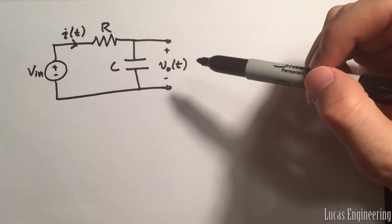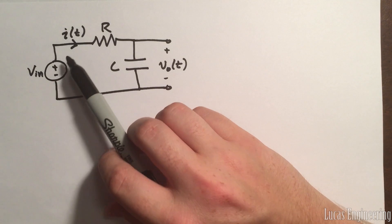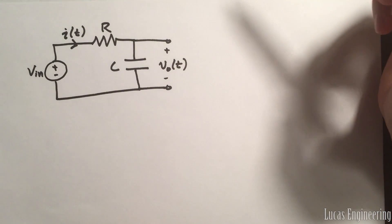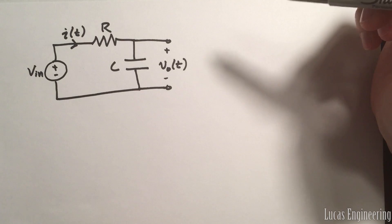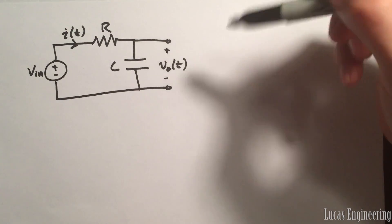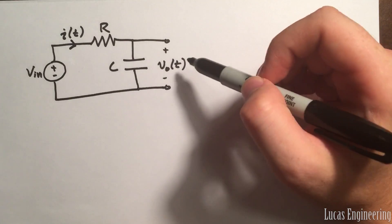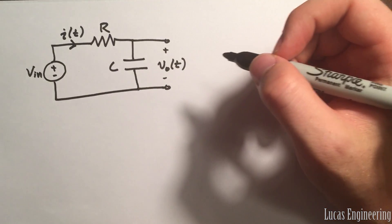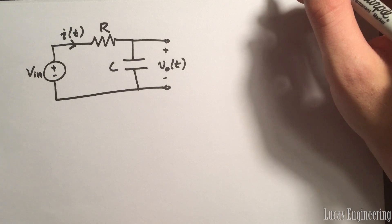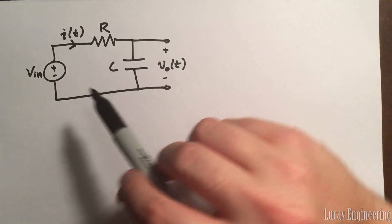The voltage and current in the capacitor are going to vary with time, so I have I as a function of T. Remember that when we have functions that depend on another variable we write them with a lowercase letter — so this is a lowercase V and a lowercase I. That's just common convention from engineering.